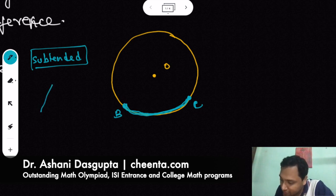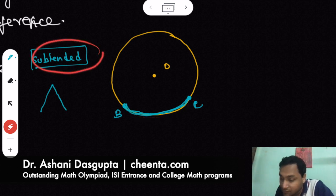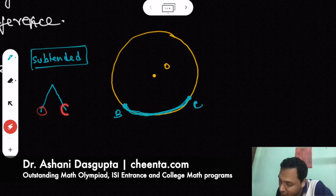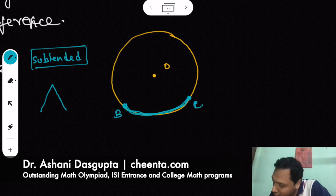It just means that the feet of the angle are at B and C. Remember, if you draw an angle, there will be two rays. When I say the arc BC is subtending some angle, it basically means that the feet of the angle are at B and C.